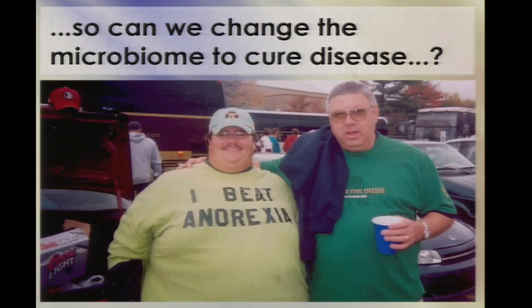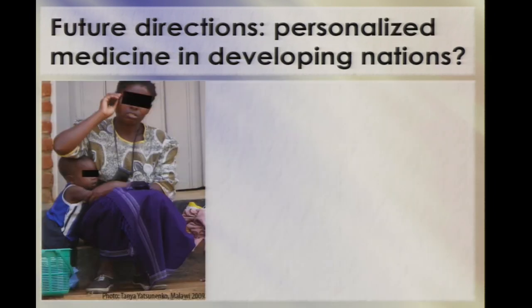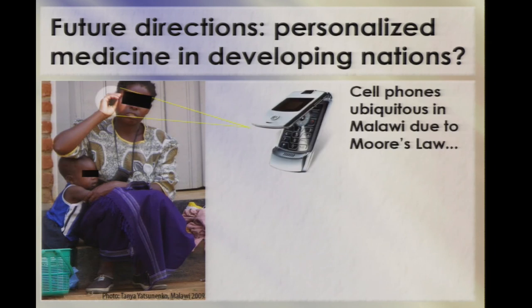Can we actually change the microbiome in a way that lets us cure disease? We're taking the work on the microbiome associated with disease to developing countries. This is a photo Tanya Yatsunenko, one of Jeff Gordon's grad students, took at one of our field sites in Malawi — a malnutrition clinic. You'll notice that although food is scarce, they do have access to cell phones. There are now over 5 billion active cell phones on Earth, which is impressive when you consider there are only about 7 billion people. Of the billion poorest people in the world, 20% have their own cell phone, and current penetrance in Kenya is 95% of households. A large part of the reason is Moore's law — the decline in the cost of computation means digital signal processing is so cheap it's effectively free.